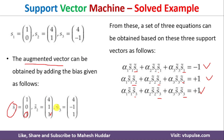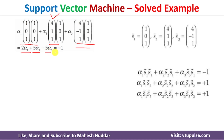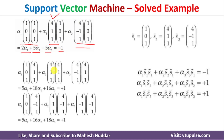We now substitute values and compute dot products for the first equation. S1·S1: 1×1 + 0×0 + 1×1 = 2, giving 2α1. S2·S1: 4×1 + 1×0 + 1×1 = 5, giving 5α2. S3·S1: 4×1 + (-1)×0 + 1×1 = 5, giving 5α3. So the first equation becomes: 2α1 + 5α2 + 5α3 = -1.